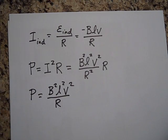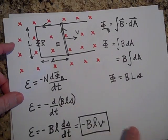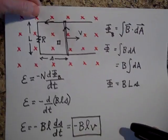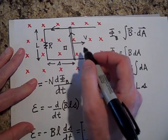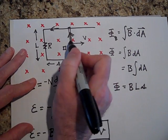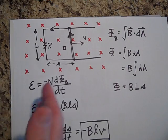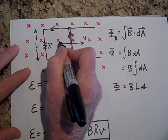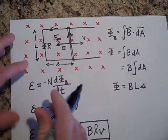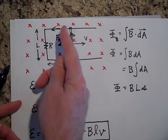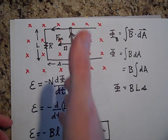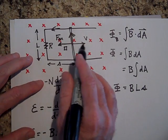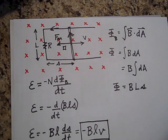To pull the bar at a constant speed, there must be a force pulling back. Here's why: the current flows upward in the bar, and the magnetic field is into the page. By the right-hand rule, there's a magnetic force on that current-carrying wire. With thumb pointing up (current) and fingers into the page (field), the force on the bar is to the left — opposing our pull.